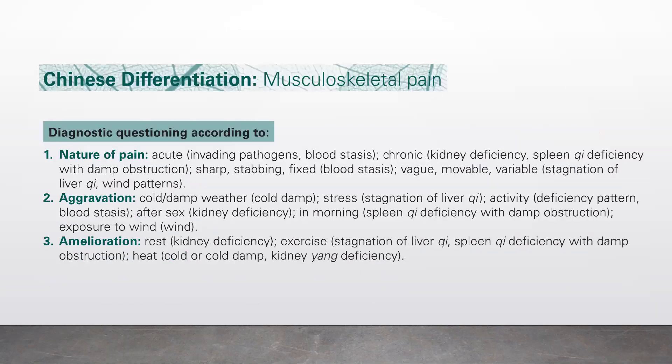Diagnostic questioning according to Chinese medicine: number one, nature of pain — acute indicates invading pathogens or blood stasis; chronic indicates kidney deficiency or spleen deficiency with damp obstruction. Sharp, stabbing, fixed pain indicates blood stasis; big, movable, variable pain indicates wind patterns.